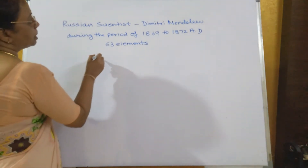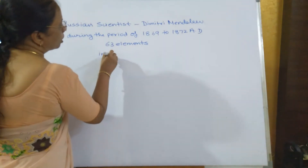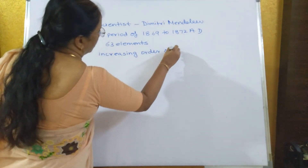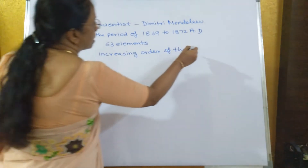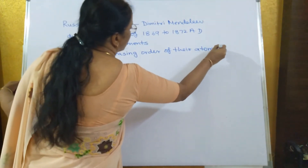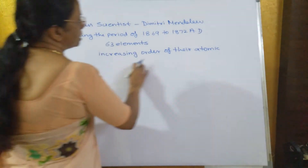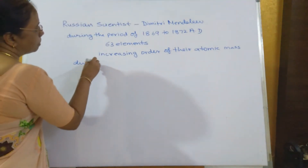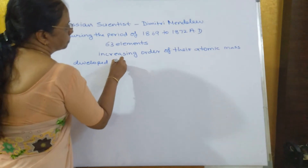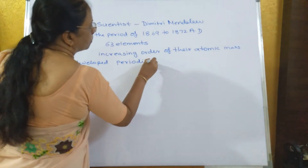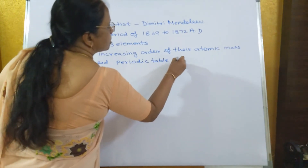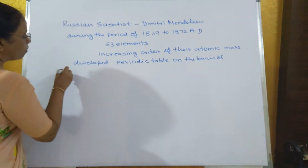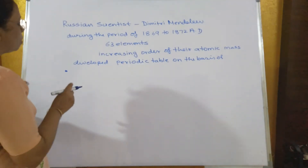He first arranged all the elements in increasing order of their atomic mass, and then he developed a periodic table on the basis of the physical and chemical properties of the elements.